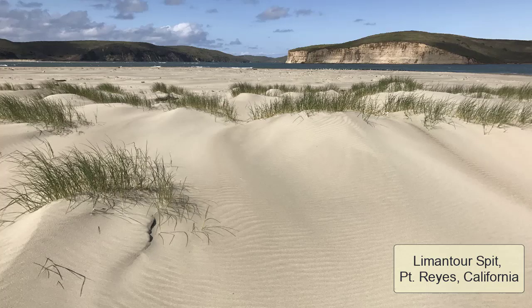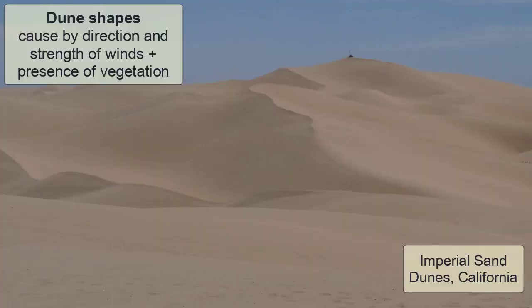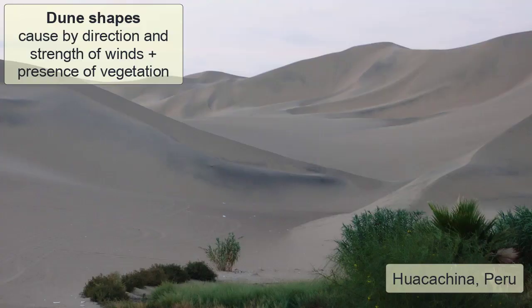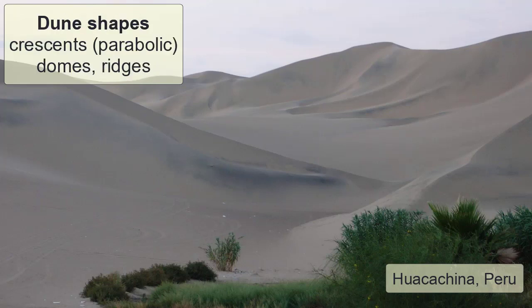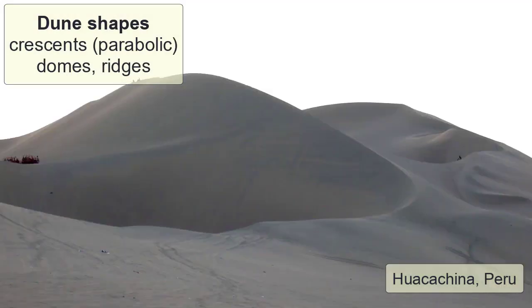Dunes also form along coastlines. When rivers rich in sediment reach the ocean and dump that sediment on the beaches, winds can blow the sands back onto the land. The shape of sand dunes formed in any region comes from a combination of the prevailing wind direction and speed, as well as the presence of any vegetation that can trap the sand. Common shapes of dunes include crescent-shaped, dome-shaped, and ridge-shaped.